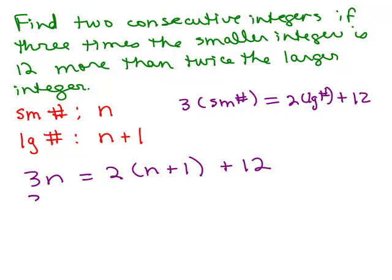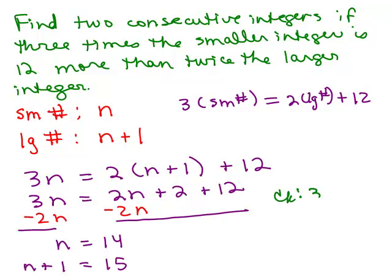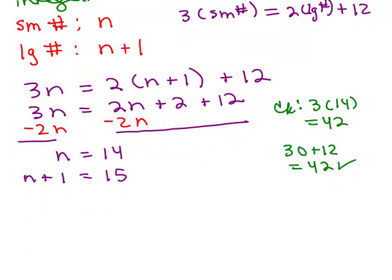Let's solve it. 3n equals 2n plus 2 plus 12. Subtract 2n from both sides and add 2 and 12 on the right side, so n equals 14. Since n is the smaller number, n plus 1 is 15. Let's check: 3 times 14 is 42. Twice the larger is 2 times 15 equals 30, and 30 plus 12 is 42. That confirms the numbers are 14 and 15.